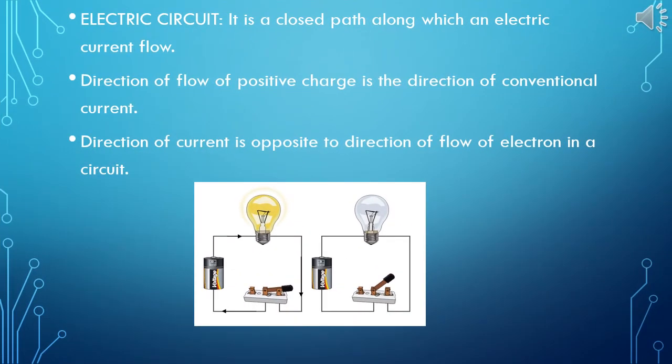Now about electric circuit. It is the closed path along which an electric current flows. Direction of flow of positive charge is the direction of conventional current. It is given in figure where the bulb is glowing. Current flows from positive charge to negative charge. Direction of current is opposite to the direction of flow of electron in a circuit.